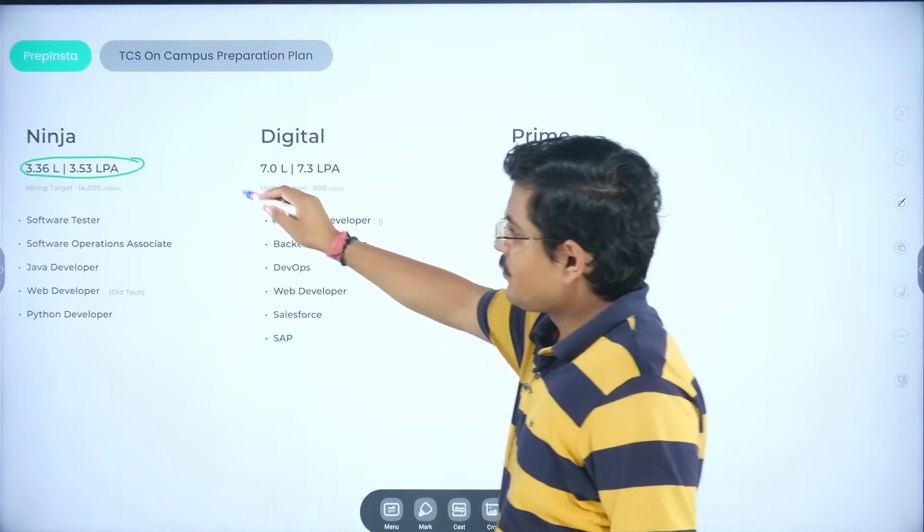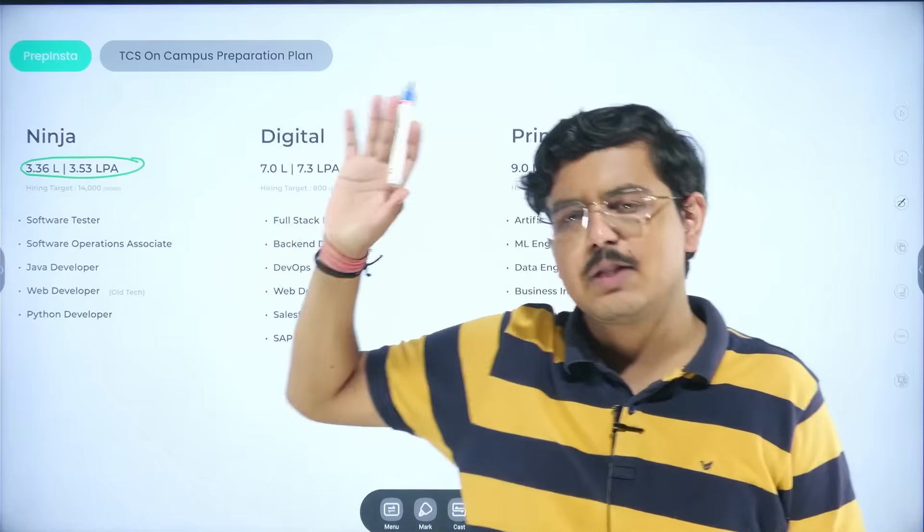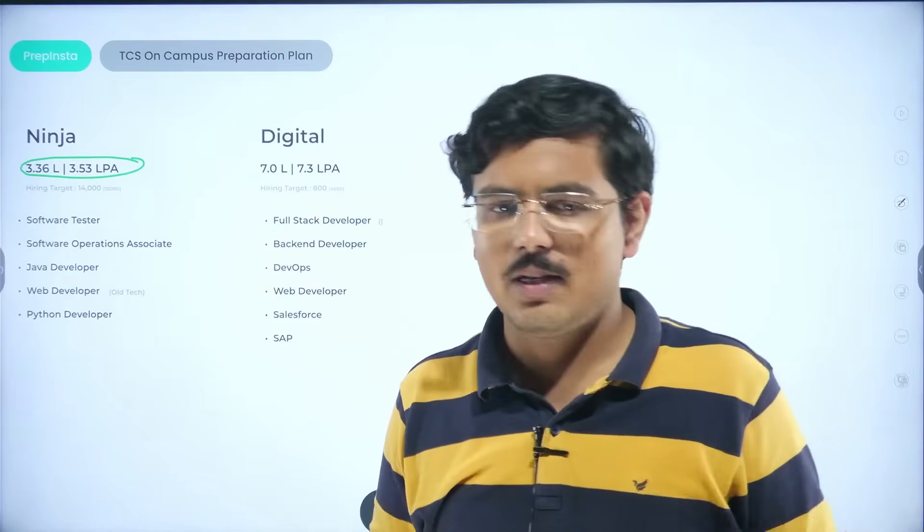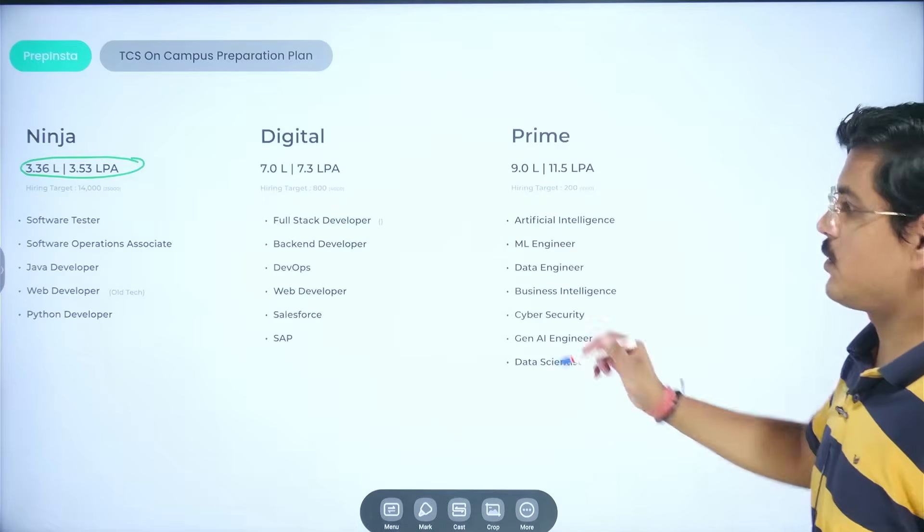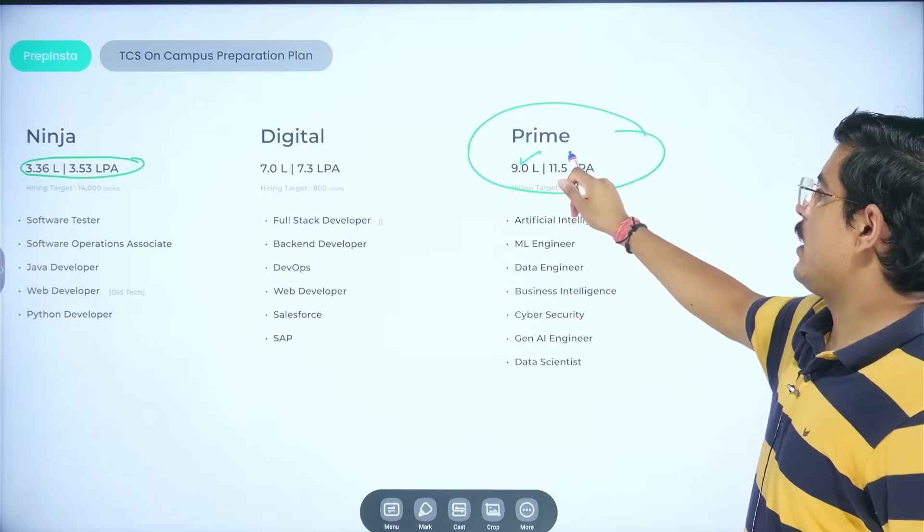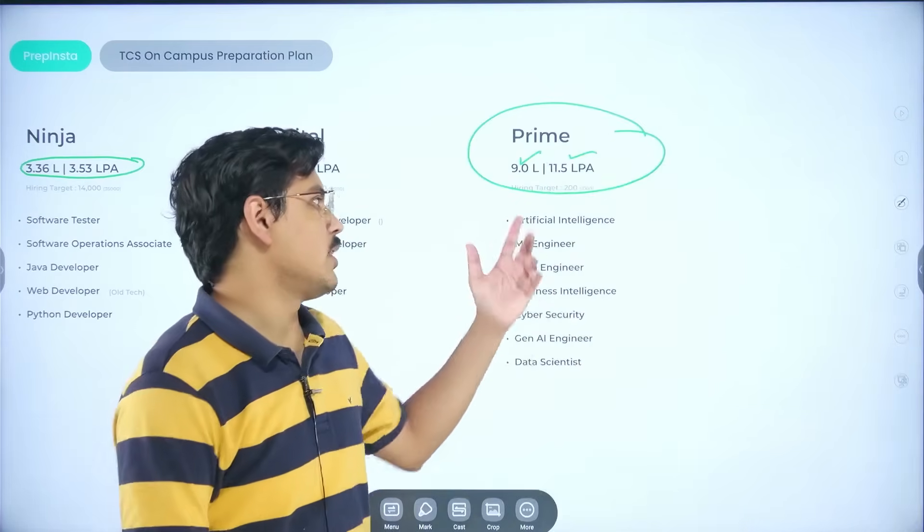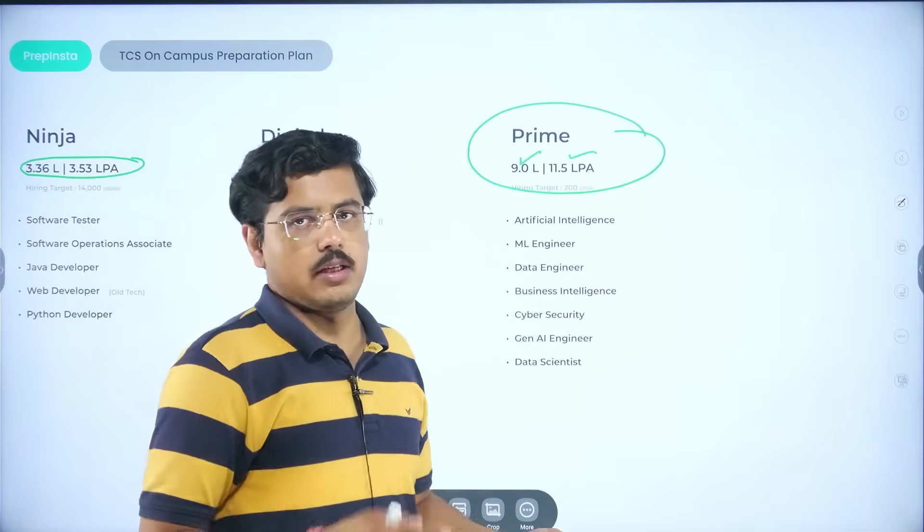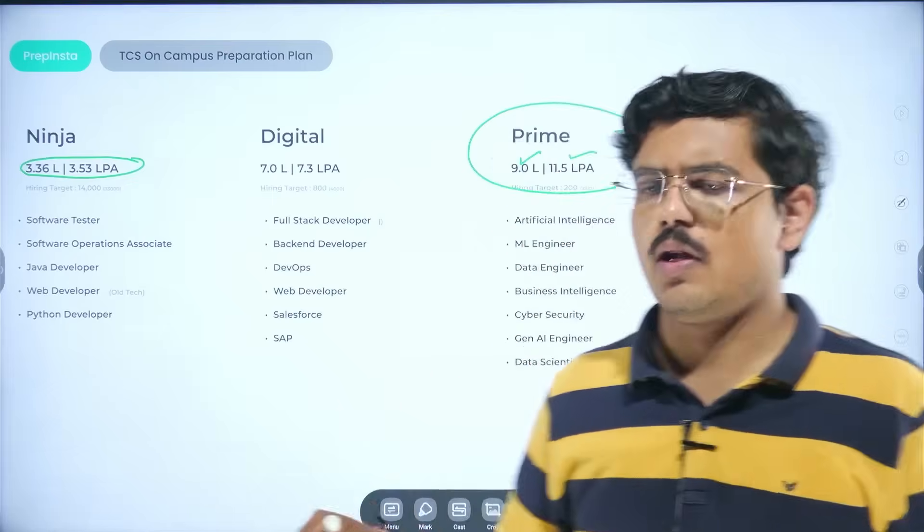Ninja is one of the most sought after profiles for those people who are wanting to just grab any job. But that's not the best profile that TCS offers. The best profile that TCS offers is Prime, which is 9 LPA and 11.5 LPA. 11.5 is for post-graduates, 9 is for graduates. And you get cutting edge domains here: cybersecurity, Gen AI Engineering, artificial intelligence, a lot of cutting edge technologies you get here.